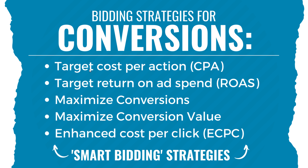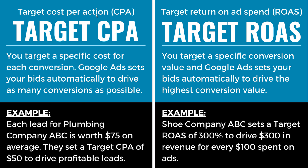Let's start with the top two. On the left we have target CPA — target cost per action — and on the right we have target ROAS — target return on ad spend. With target CPA, you're targeting a specific cost for each conversion, an average cost you want to pay for every single conversion through Google Ads. Google Ads is automatically going to set your bids to drive as many conversions as possible. Here's an example: each lead for plumbing company ABC is worth $75 on average, so they set a target CPA of $50 to drive profitable leads, meaning for every lead they drive, they're making $25. Your goal is to get your target CPA as low as possible so you can make as much money as possible on the leads you're driving.